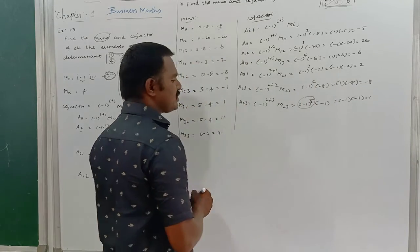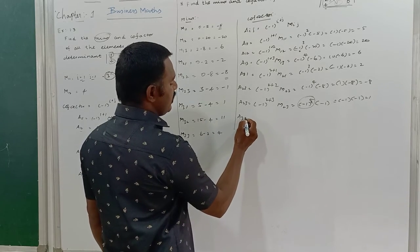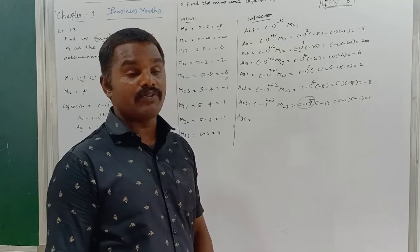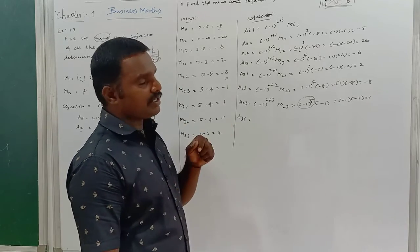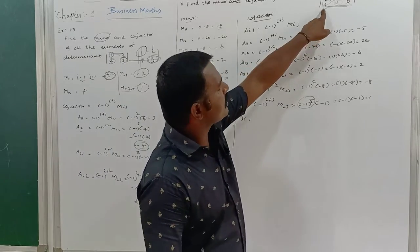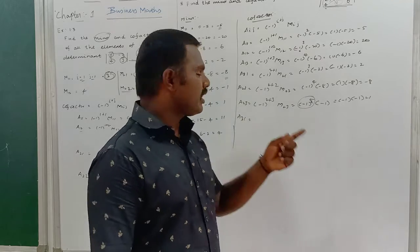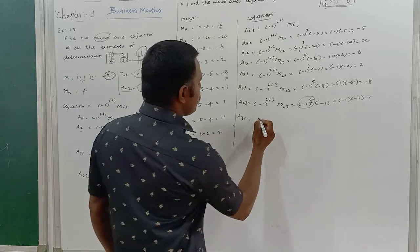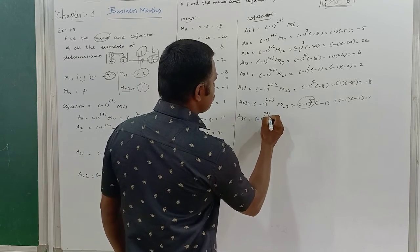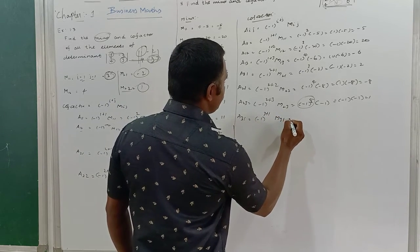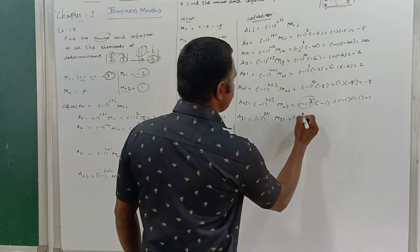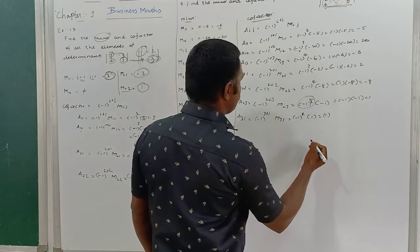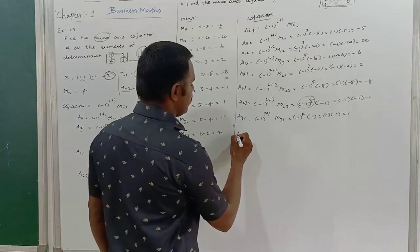A31: third row, first column. To find the cofactor of element 4, first find the minor, then apply the formula. A31 = (-1)^(3+1) × M31 = (-1)^4 × 1 = plus 1 × 1 = 1.